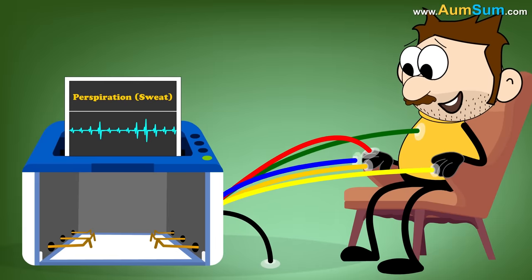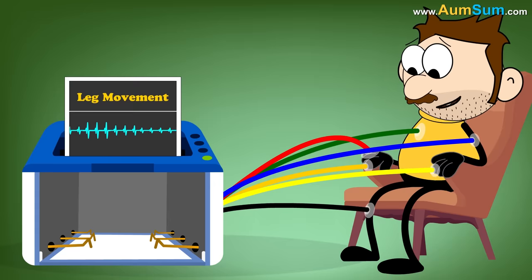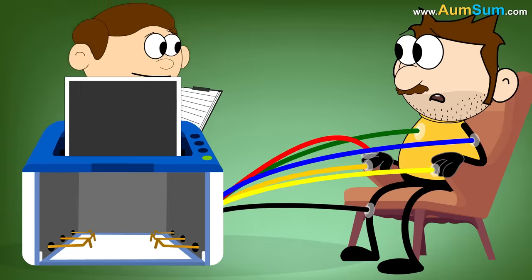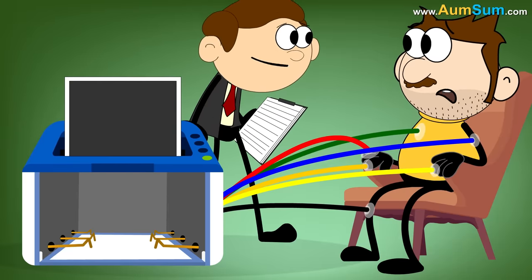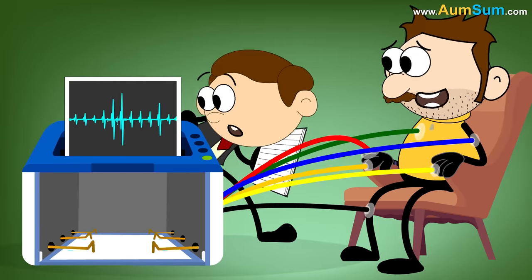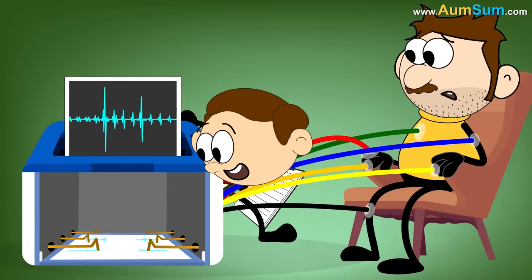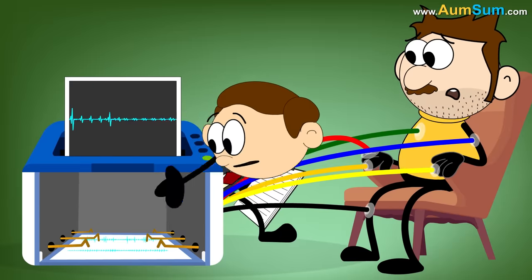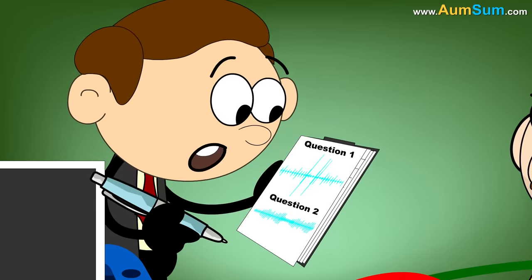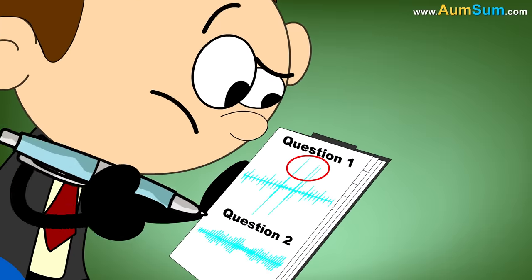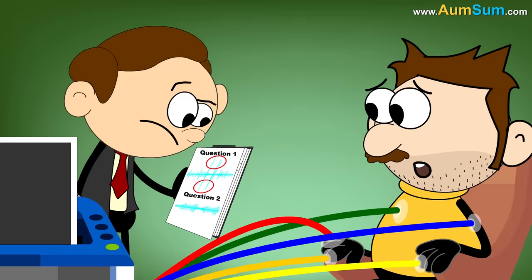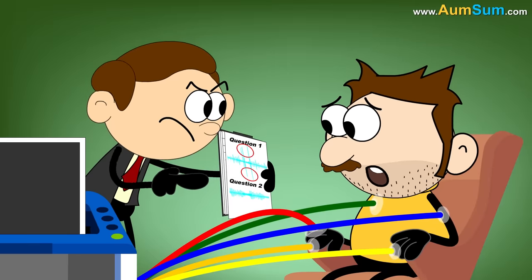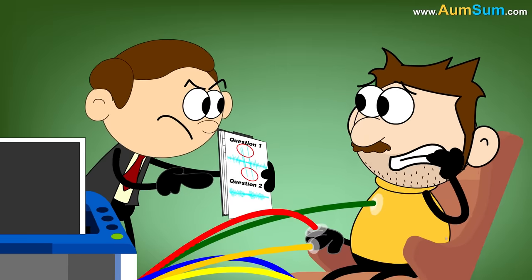Some polygraphs also record arm and leg movement of the person. Now, when the test starts, a number of questions are asked by the examiner to the person. During the test, all the signals coming from the person are recorded on the moving paper. Now, while examining the paper, the examiner can see whether any vital signs change significantly during any of the questions. Generally, a significant change in vital signs indicates that a person may be lying.